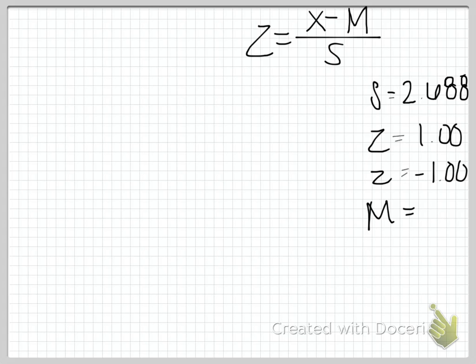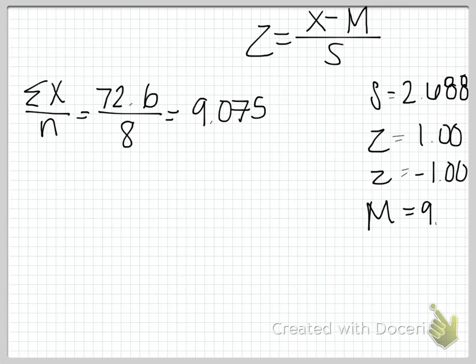So now, the last thing we really need to figure out is simply the mean. So to figure out the mean, we simply add up all our scores and divide by the number of scores we have. So it's simply sum of x over n, which in this case equals 72.6 divided by 8, and that gives us a mean of 9.075. So I'll go ahead and fill that in here.